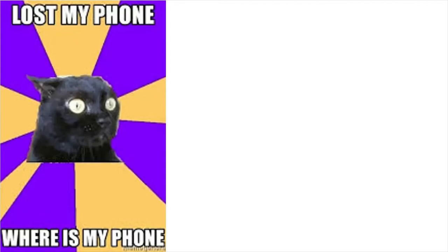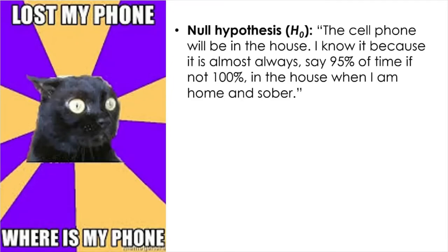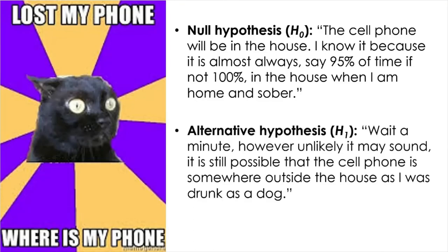Only once in a blue moon — a very unlikely event — would my phone be found outside of the house. So, to find my phone, I use my wife's phone to infer the location of mine. My null is that the cell phone will be in the house. That is my default position, assuming nothing happened. I know it's in the house because it is almost always — say 95% of the time, if not 100% — in the house when I'm home and sober. However unlikely it may sound, it is still possible that the cell phone is somewhere outside the house because I was drunk. So that is your alternative hypothesis.